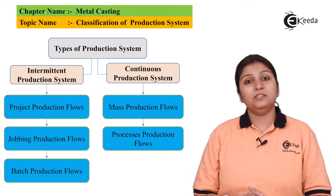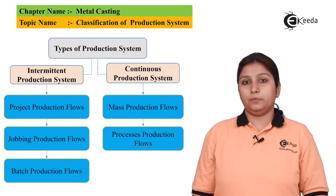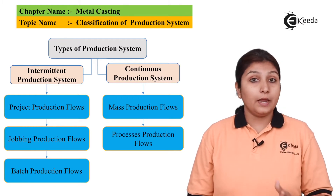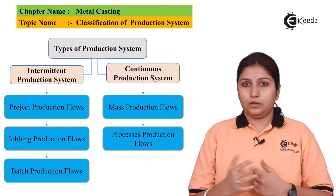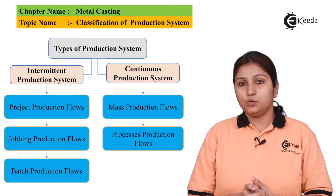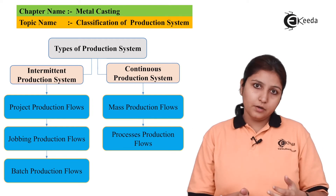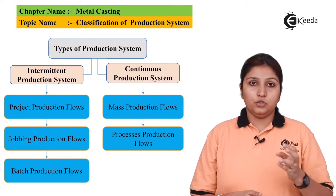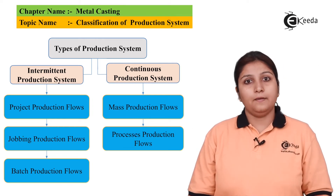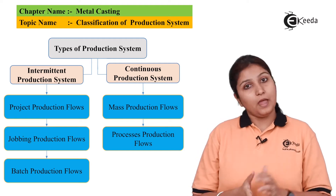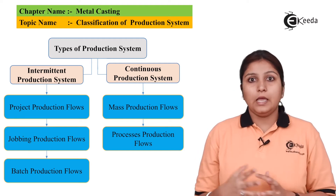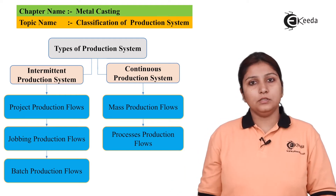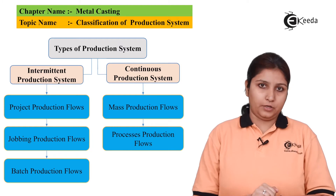There are basically two types of production process. One is intermediate, second is continuous. Intermediate is again divided into three types: jobbing, batch, and project. Continuous process is again divided into process or mass production.